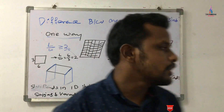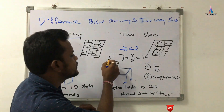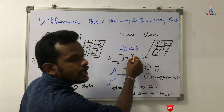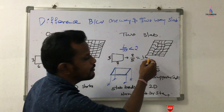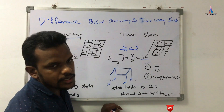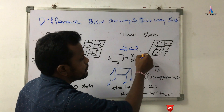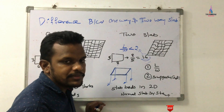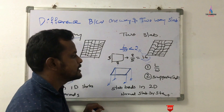In the same way, consider a slab with length 8 meters and width 5 meters. So 8 divided by 5 equals approximately 1.6. Since 1.6 is less than 2, this slab falls under the two-way slab system.